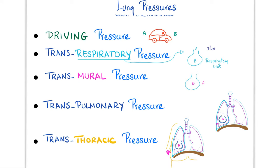The names contain the answers. Driving pressure: air flows from high to low pressure (e.g., California to Arizona); the difference is the driving pressure. Trans-respiratory pressure: the alveolus is the respiratory unit — pressure outside (atmospheric) minus pressure inside the alveolus. Transmural ('mural' = wall): pressure inside the airway minus pressure outside the airway. Transpulmonary: intra-alveolar pressure minus intra-pleural pressure. Transthoracic: intra-alveolar pressure minus pressure on the body surface.